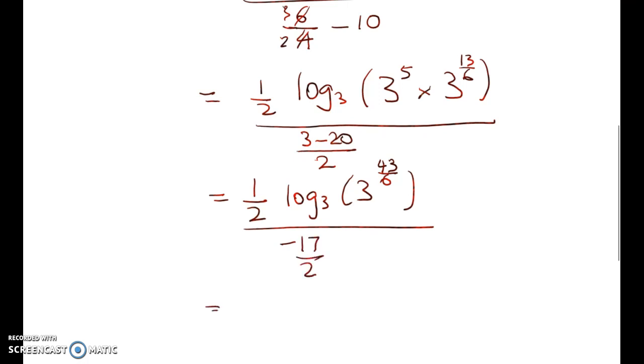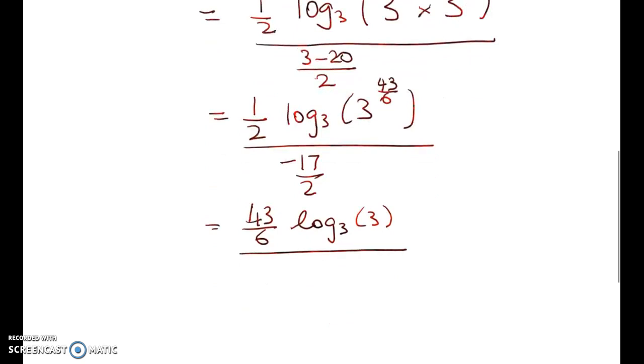So now we've got, what am I doing, 43 over 6, log to base 3 of 3, divided by negative 17, and that's timesing through by 2 over 2, to deal with these, these 2's here.